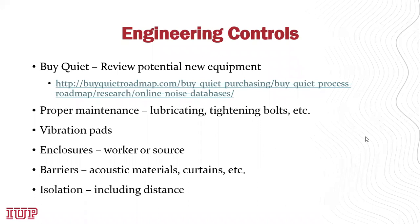The next slide covers different types of engineering controls and information for purchasing equipment. If purchasing new equipment, you would ideally choose a comparable piece known to be quieter or produce lower noise levels. The Buy Quiet Roadmap link provides information about equipment that has been monitored and measured to determine what is quieter, allowing you to control noise from the point of purchase rather than dealing with equipment already in place.